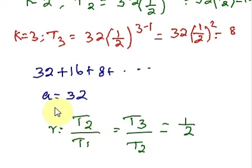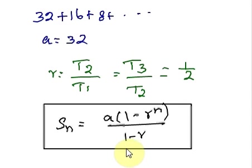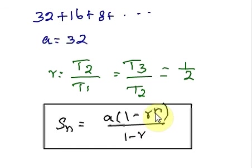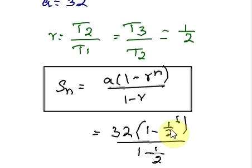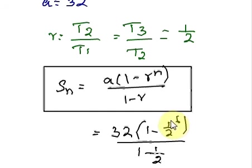Now let us use the general formula to find the sum of the series. Replace A by 32, R by 1/2, and N by 6 since k goes from 1 to 6 — there are 6 values. First, work out the exponent: (1/2) raised to 6 equals 1/64. In the denominator, 1 minus 1/2 equals 1/2. Then perform fractional subtraction, multiplication, and finally fractional division since we have a fraction in the denominator.